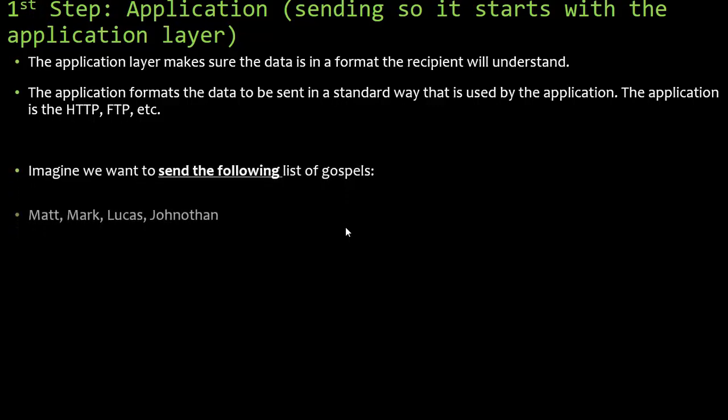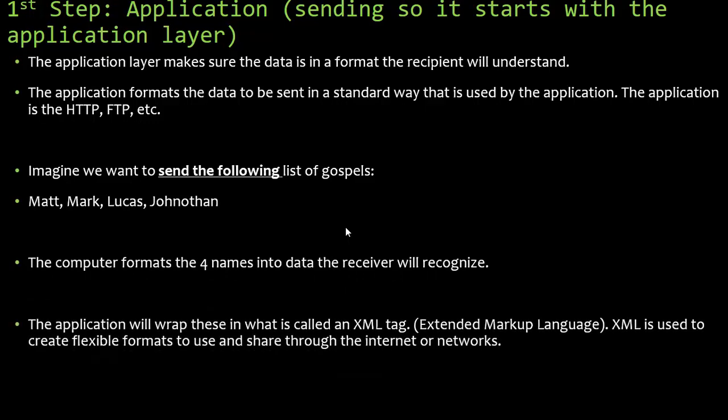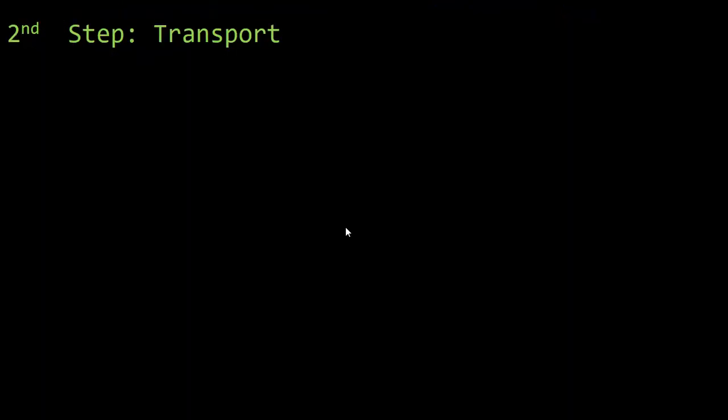Imagine we want to send the following list of gospels: Matt, Mark, Lucas, and Jonathan. The computer formats the four names into data the receiver will recognize. The application will wrap these in what is called an XML tag, which stands for Extended Markup Language. It's used to create flexible formats to use and share through the internet or networks.